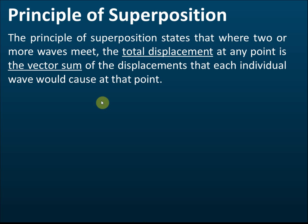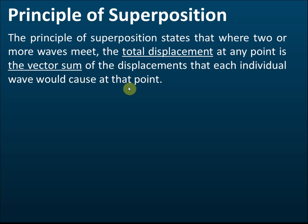The principle of superposition states that where two or more waves meet, the total displacement at any point is the vector sum of the displacements that each individual wave would cause at that point. Let's see what this means.